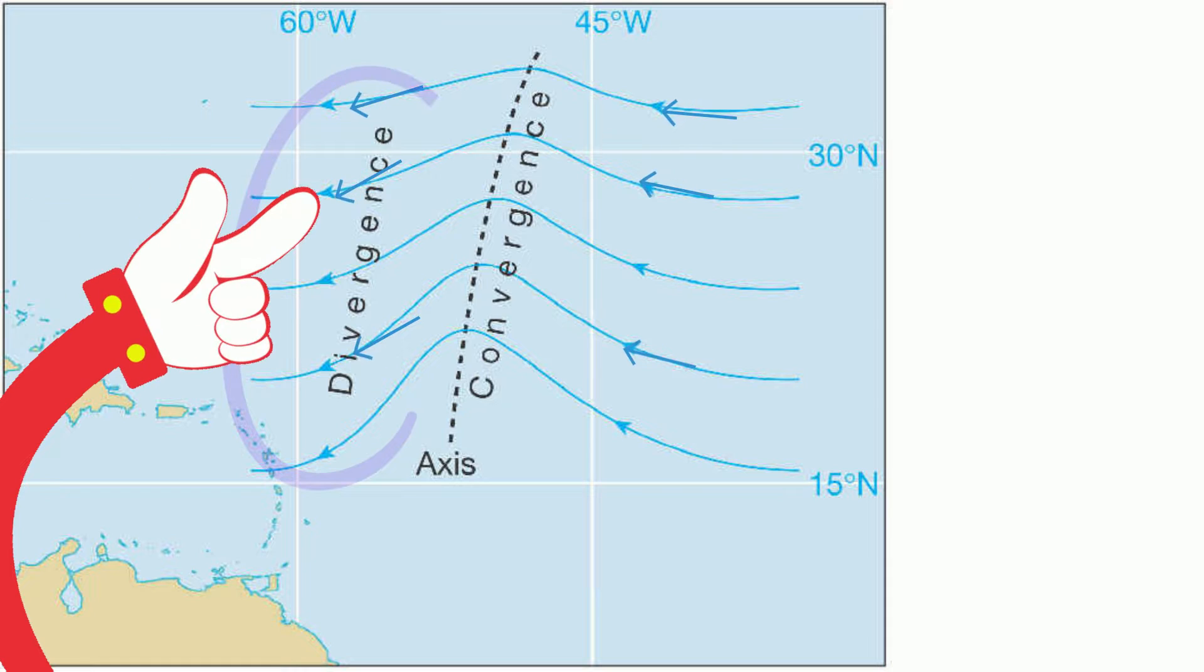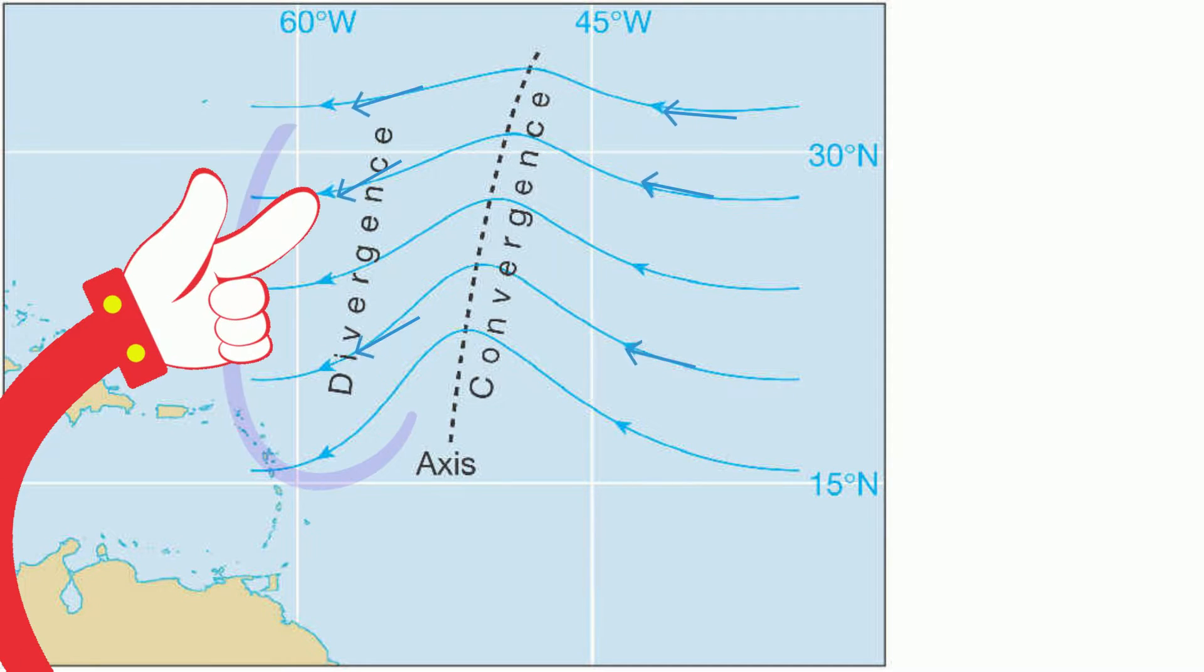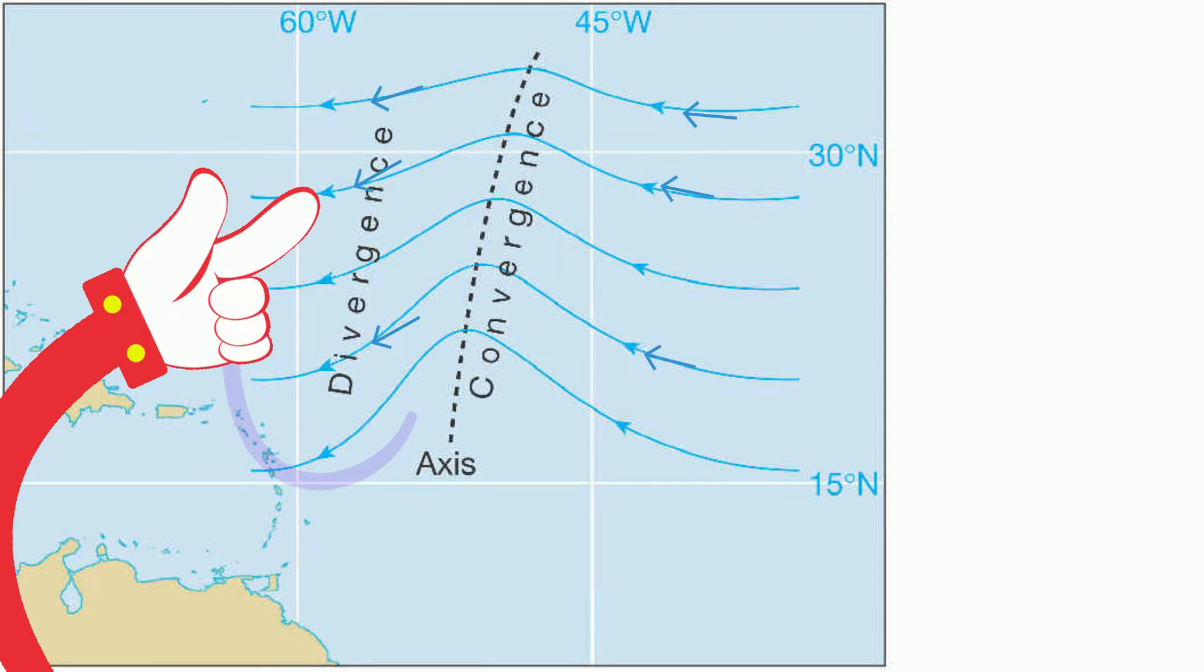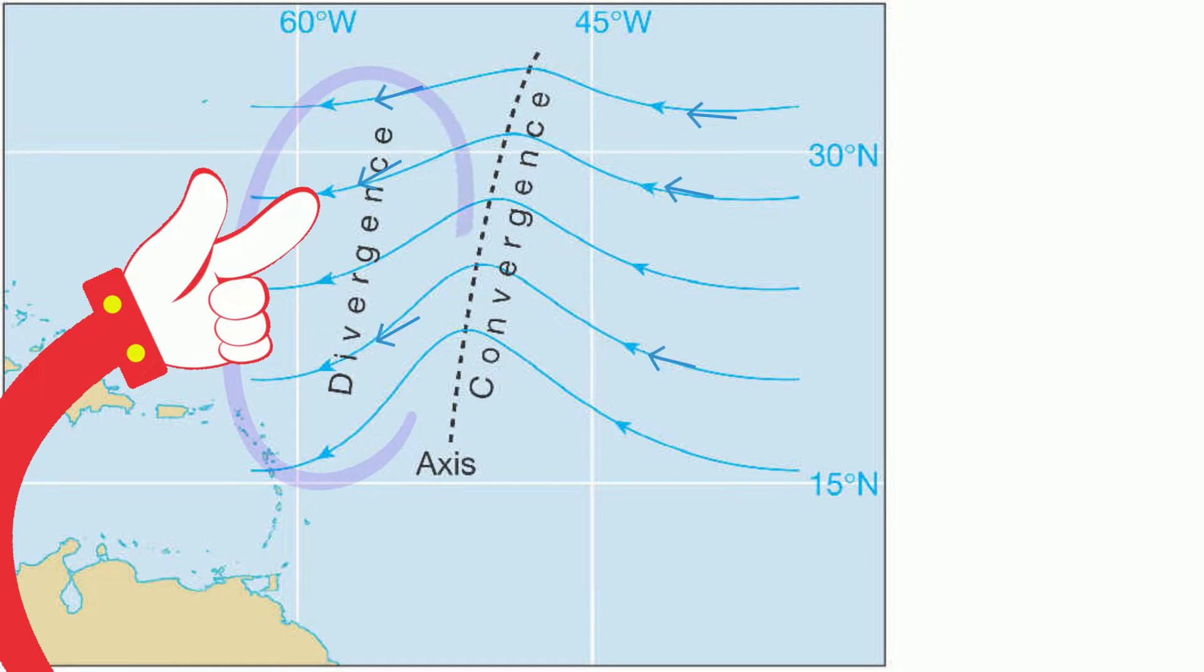Before the arrival of the trough, that is, to the west of the trough, the wind is blowing from the northeast and is subsiding slowly downwards.